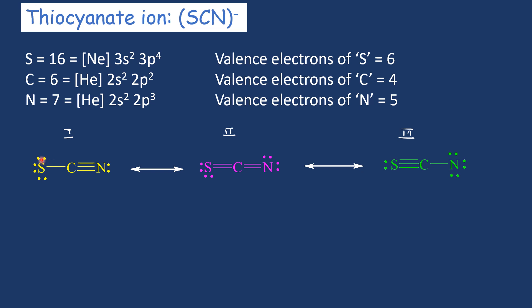In canonical structure 1: around sulfur we count 2, 4, 6, and with this bond, 7 electrons. Around carbon, 1 from one bond plus 3 from the triple bond gives 4. Around nitrogen, 3 from the triple bond plus 2 from the lone pair gives 5. In canonical structure 2: around sulfur, 2, 4, 6 — giving 6. Around carbon, 2 plus 4 gives 4 (accounting for two double bonds). Around nitrogen, 2, 4, 6 — giving 6. In canonical structure 3: around sulfur, 2 plus 3 gives 5. Around carbon, 3 plus 1 gives 4. Around nitrogen, 2, 4, 6, plus 1 from the single bond gives 7.